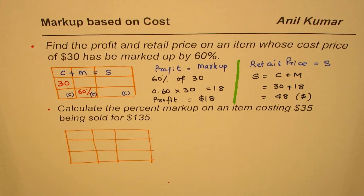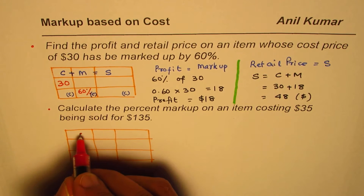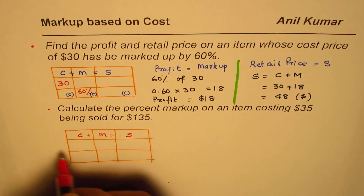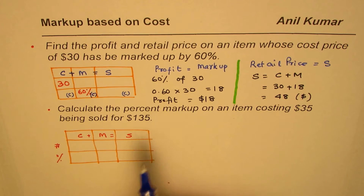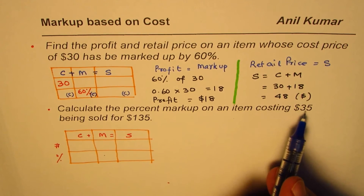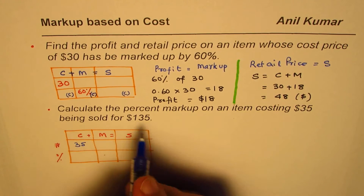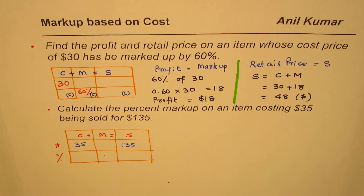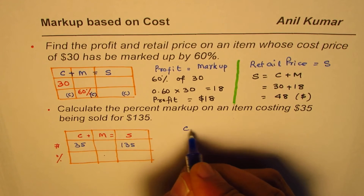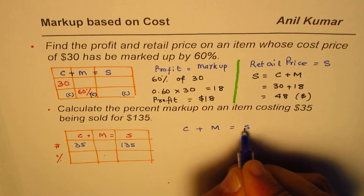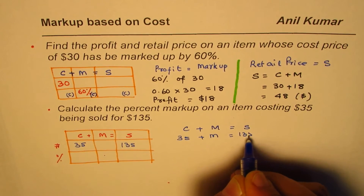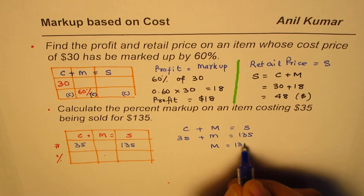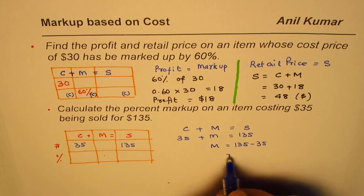We have cost plus markup equals sales — we'll put numbers in the first row and percentages in the second row. We are given: cost is $35, and sales price is $135. So markup equals $135 minus $35, which gives us $100.